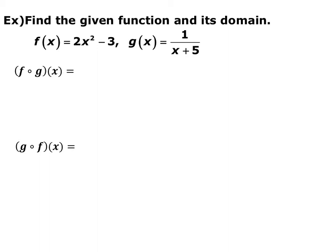We're given two functions, f of x and g of x, and we want to find the composite f composed with g and its domain. I always write it as f of g of x, because that tells you what you're going to do. You're going to take the function 1 over x plus 5 and plug it in every time you see an x in f of x. f of x was 2x squared minus 3, so I replaced every x with 1 over x plus 5, and now I'm going to simplify it.